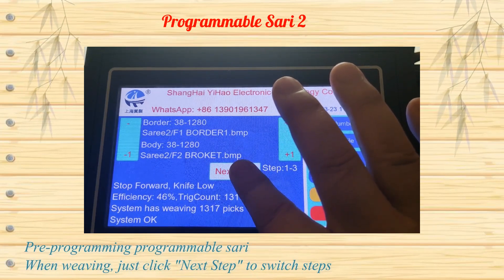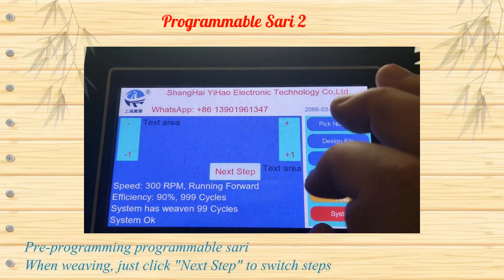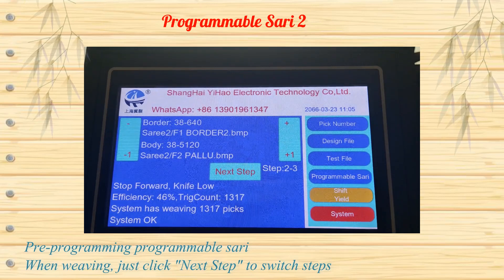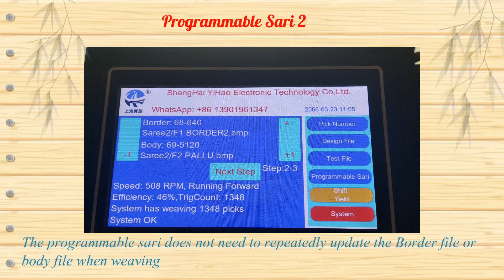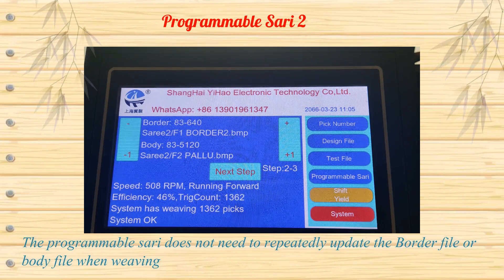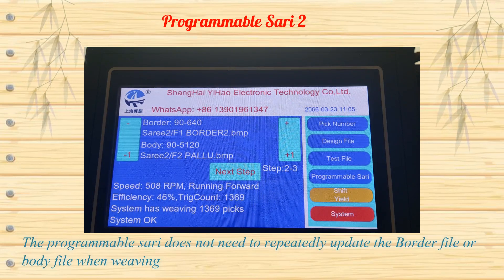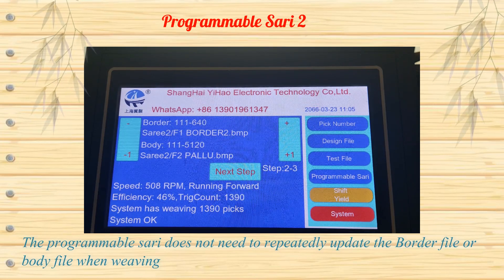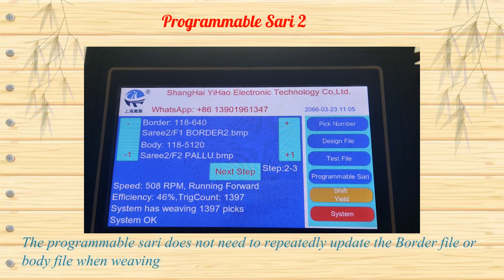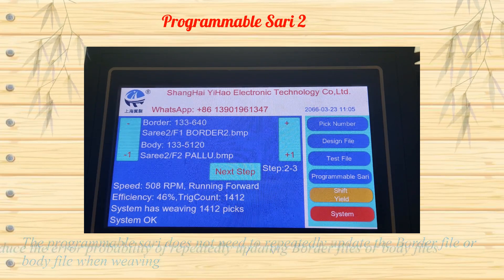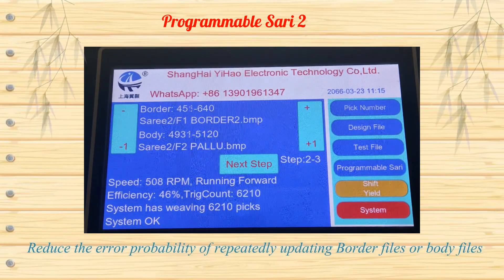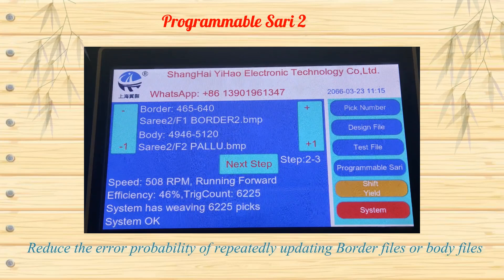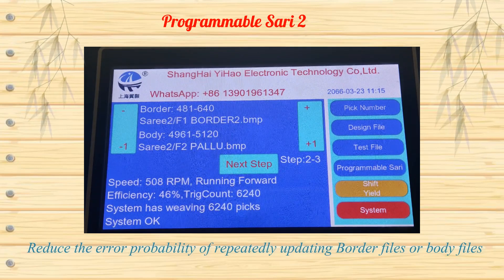Pre-programming programmable sari when weaving — just click Next Step to switch steps. The programmable sari does not need to repeatedly update the border file or body file when weaving, reducing the error probability of repeatedly updating border files or body files.